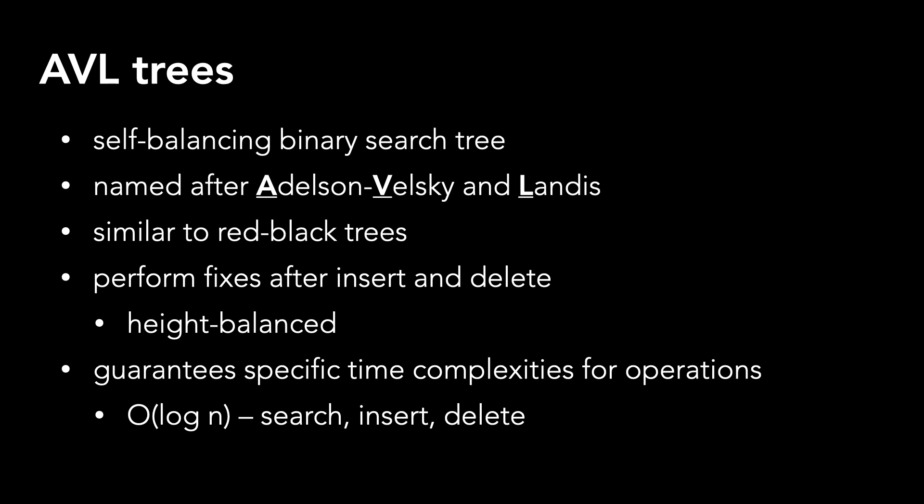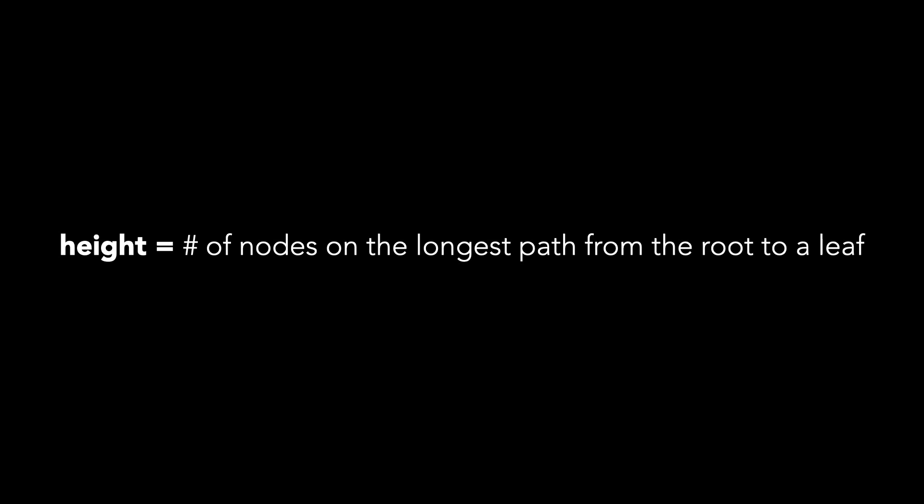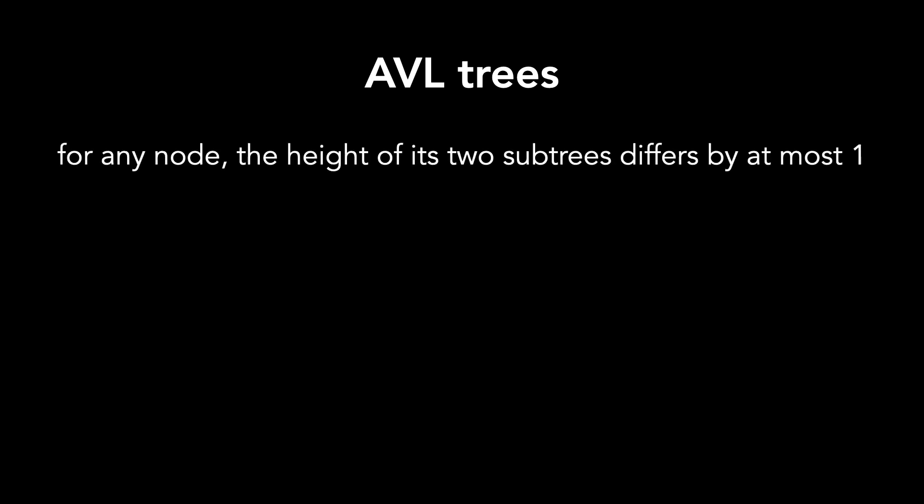As a reminder, the definition of height is the number of nodes on the longest path from the root to a leaf node. The central property of AVL trees is that for any node, the height of its two subtrees differ by at most one.